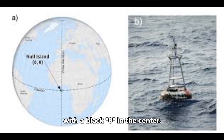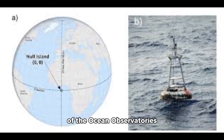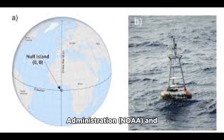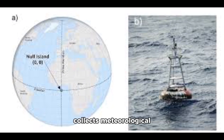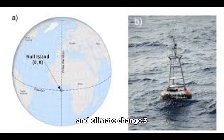The flag features a white background with a black zero in the center. The actual physical presence at this location is the sole buoy, station 13000, part of the Ocean Observatories Initiative (OOI). This buoy, maintained by the National Oceanic and Atmospheric Administration (NOAA) and other organizations, collects meteorological and oceanographic data, contributing to our understanding of weather patterns, ocean currents, and climate change.